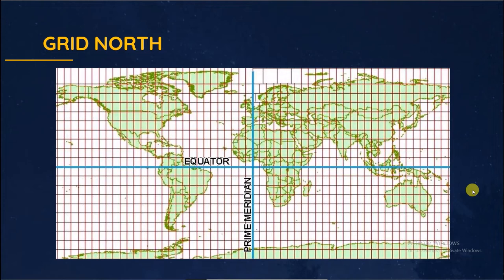Grid north is observed by map. It is the direction to which the north to south grid lines on a map point. Every map has a series of eastings and northings lines drawn on the map which divide the map into rows and columns of little boxes. The box is called grid.